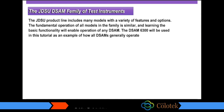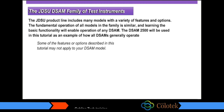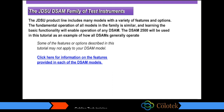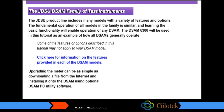The JDSU product line includes many models with a variety of features and options. The fundamental operation of all models in the family is similar, and learning the basic functionality will enable operation of any DSAM. The DSAM 6300 will be used in this tutorial as an example of how all DSAMs generally operate. Upgrading the meter can be as simple as downloading the file from the internet and installing it on the DSAM using optional DSAM PC utility software.